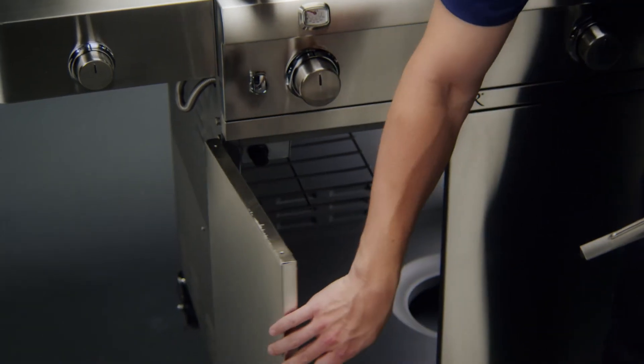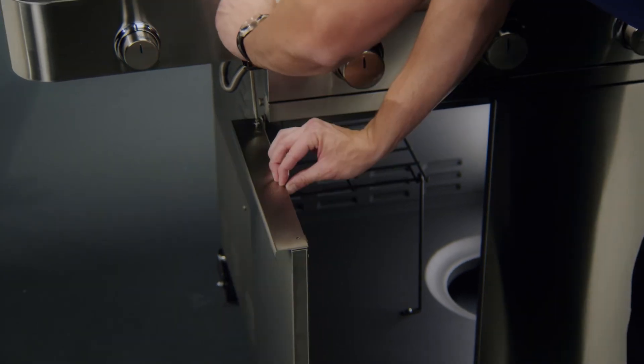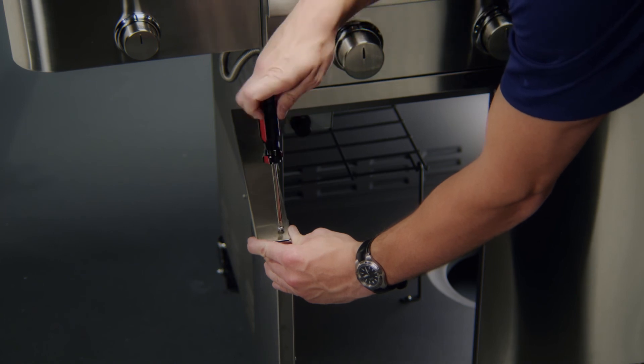Step 10. Open the cart doors. Place a door handle at the top of the door, aligning the screw holes. Secure with two 10-24 3/8 inch machine screws. Repeat for the other door.